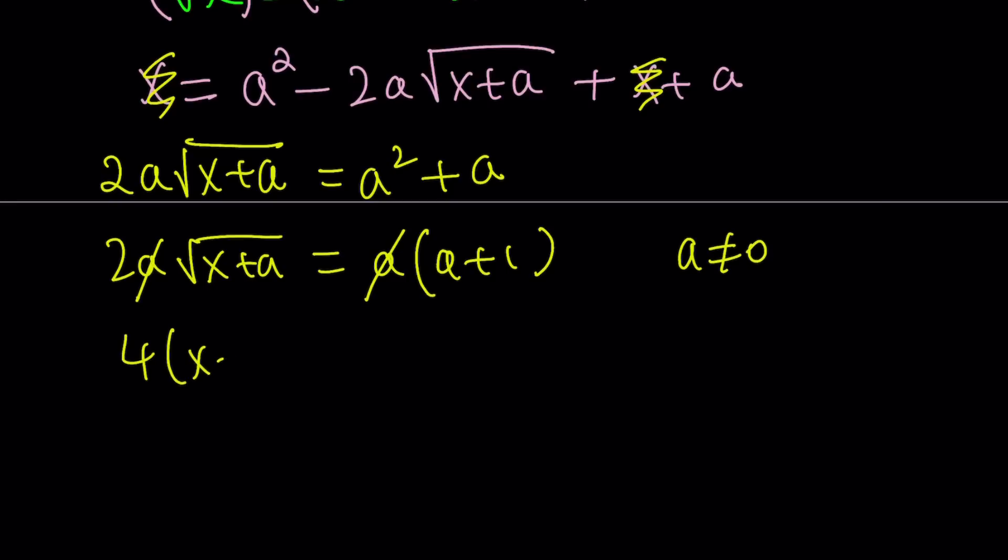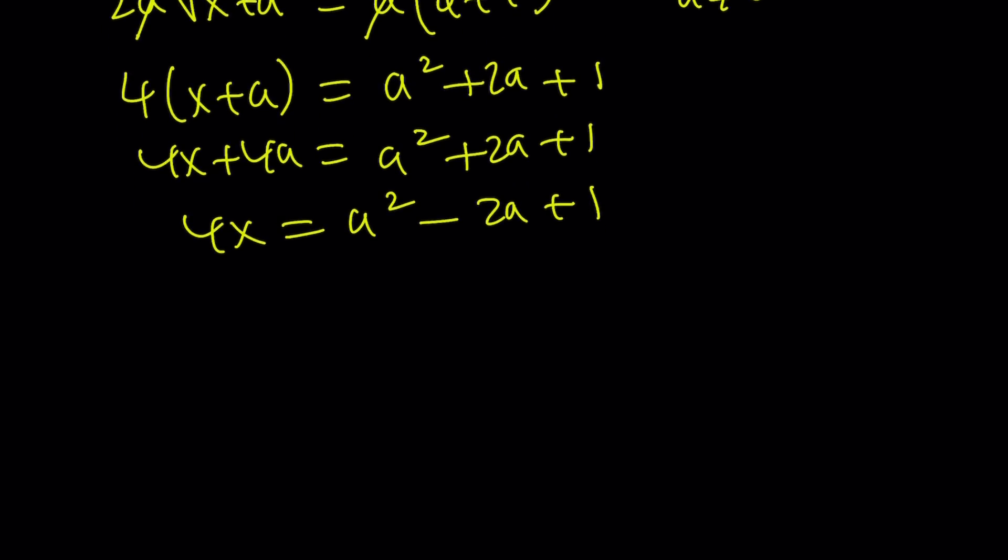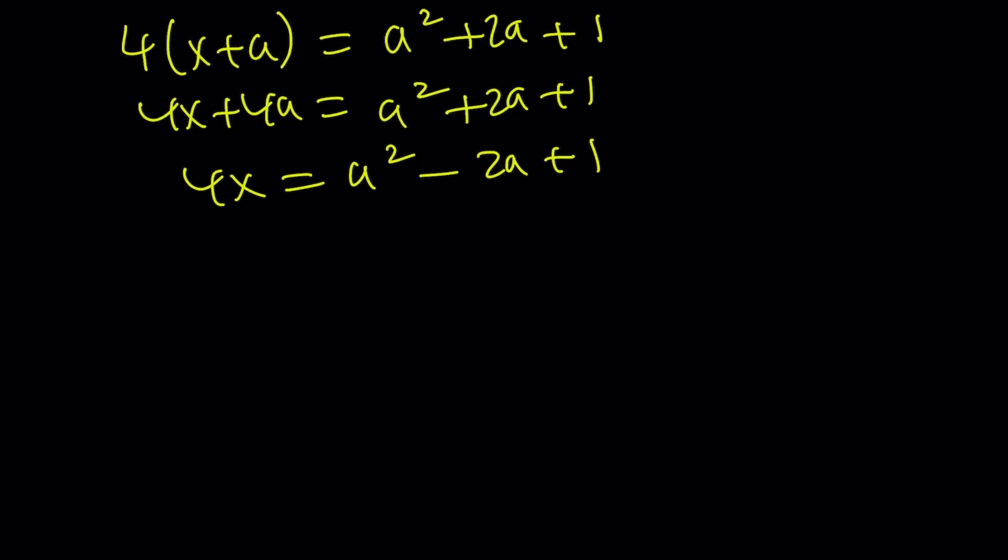4 times x plus a equals a squared plus 2a plus 1, a plus 1 quantity squared. Alright, so let's go ahead and just distribute this. 4x plus 4a is equal to a squared plus 2a plus 1. Subtract 4a from both sides. a squared minus 2a plus 1. This is kind of like a special expression, right? Don't you think?